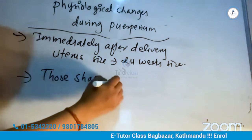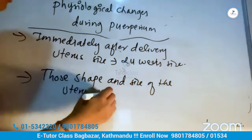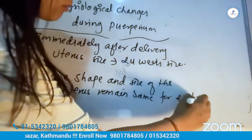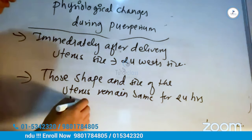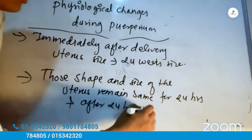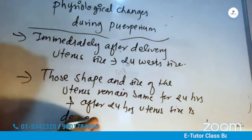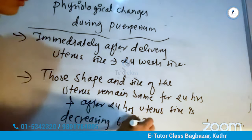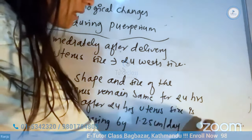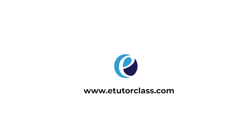The size of the uterus remains the same for the first 24 hours after delivery. After 24 hours, the uterus size decreases by 1.25 cm per day, or 0.5 inch per day.